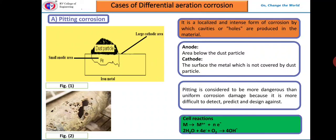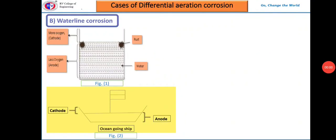Pitting corrosion is also caused by the breakdown of the protective film on the metal surface. For example, peeling off of a small tin coating on iron gives rise to a small anodic area and a large cathodic area. This results in accelerated pitting corrosion at the exposed parts.